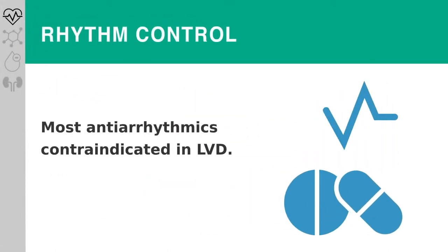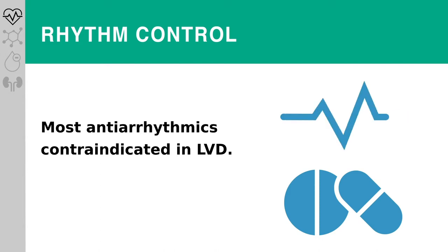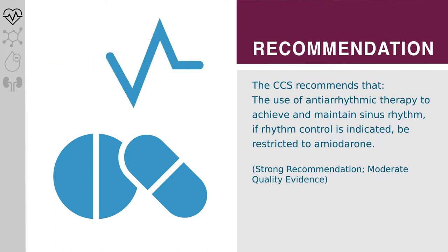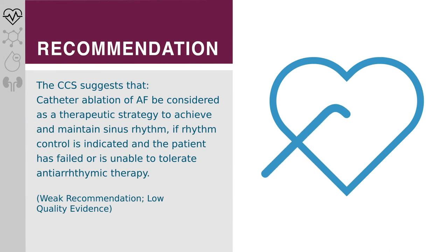Rhythm control in atrial fibrillation is reserved for patients with refractory symptoms and/or in those for whom adequate heart rate control cannot be achieved. The CCS recommends that the use of antiarrhythmic therapy to achieve and maintain sinus rhythm, if rhythm control is indicated, be restricted to amiodarone. The CCS suggests that catheter ablation of atrial fibrillation be considered as a therapeutic strategy if rhythm control is indicated and the patient has failed or is unable to tolerate antiarrhythmic therapy.